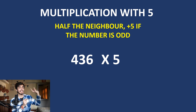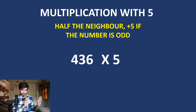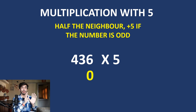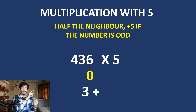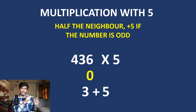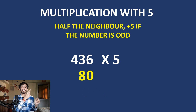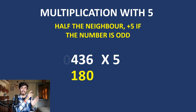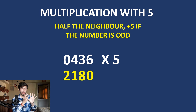Now let us do 436 multiplied by 5. Take 6 — it is even, so no need to add 5, and it has no neighbor, so 0. For 3 — it is odd, and its neighbor is 6, so half of 6 is 3, and since 3 is odd we add 5, giving 8. For 4 — half the neighbor, half of 3 is 1. And for the leading 0, it is even, so no addition of 5, giving 2. This is how you perform multiplication using the Trachtenberg system.